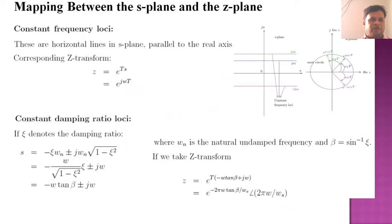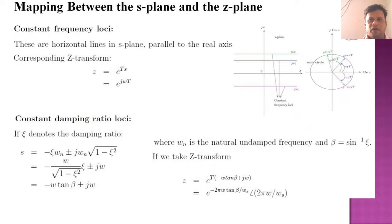In a similar way we compare the mapping between the s-plane and z-plane. Constant frequency loci are horizontal lines in the s-plane parallel to the real axis, corresponding to the z-transform z equals e^(Ts), which equals e^(jωT). In this diagram, the s-plane corresponds to j-omega-n and minus j-omega-n, and in the z-plane z equals e^(Ts) is a circle where omega-1-T, omega-2-T, and j-omega-2-T are shown as real and imaginary parts.